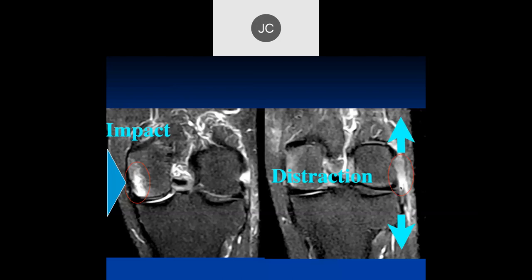What kind of injury do we call this? — Robert? — Varus injury. Yes, so this is a varus injury, where the distal part of the leg deviates medially, which causes distraction laterally and in this case an impaction medially. We'll talk about valgus injuries later.